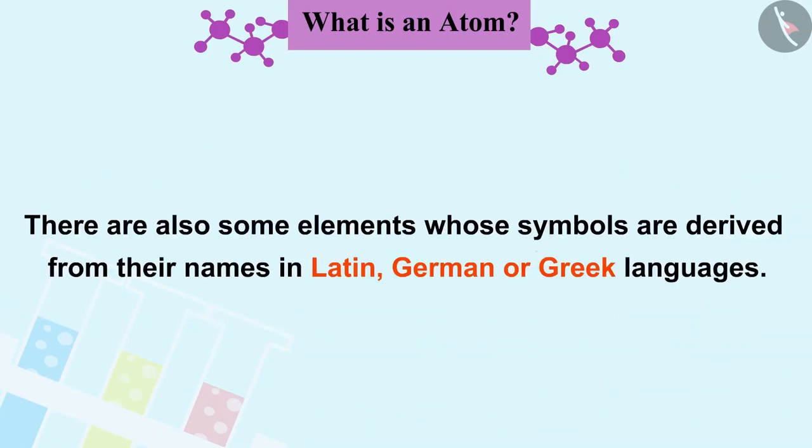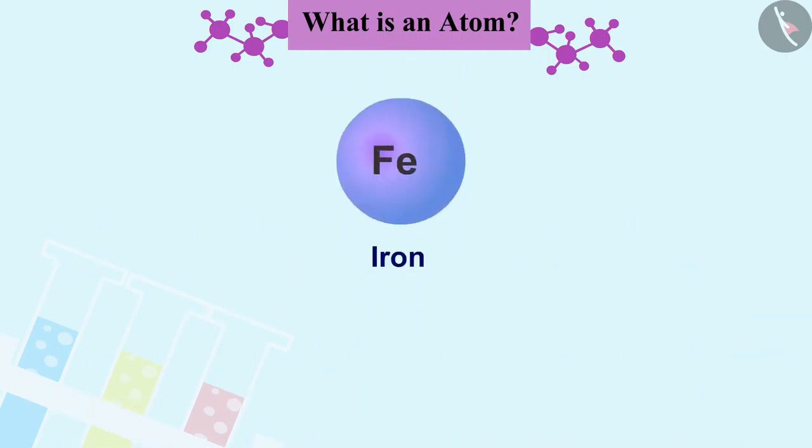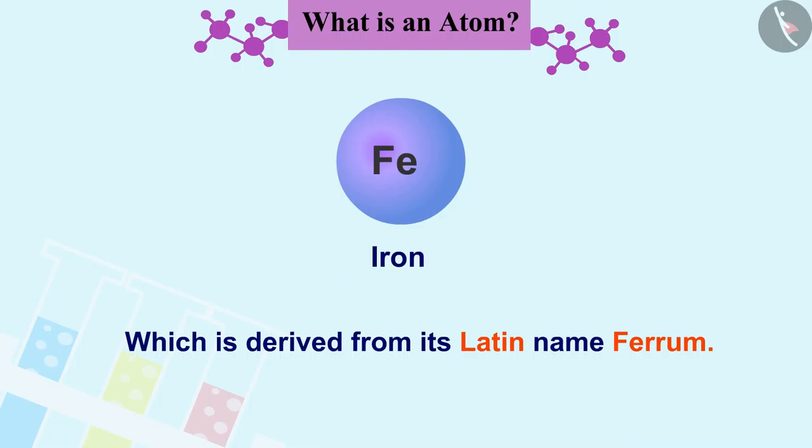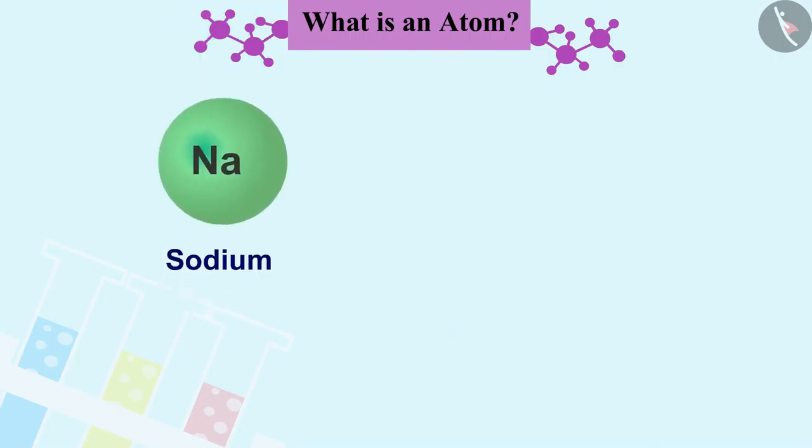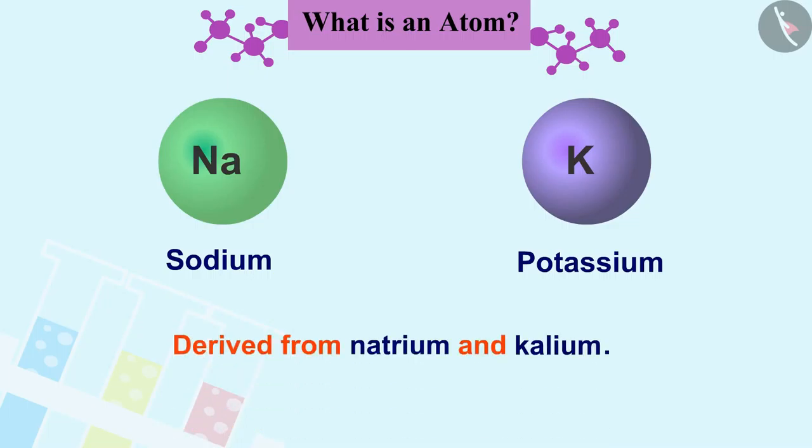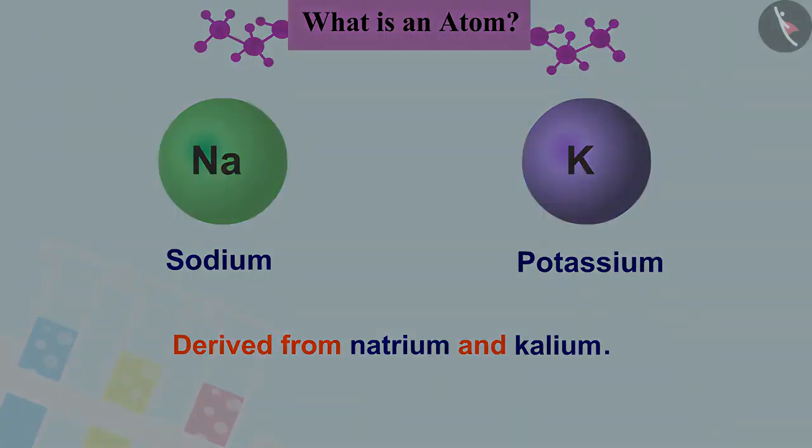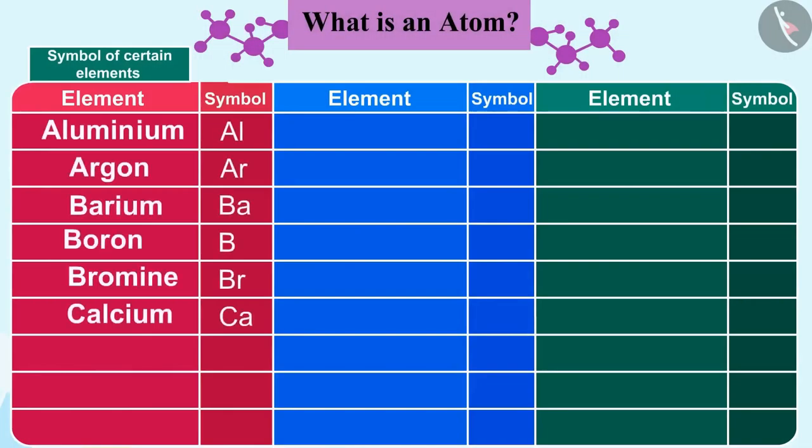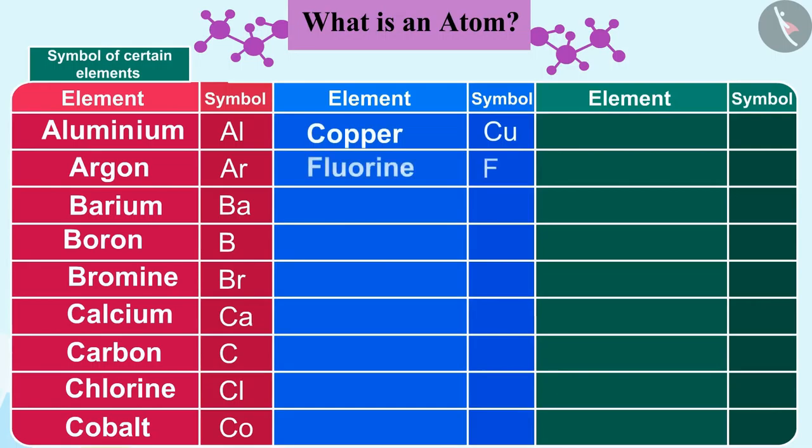There are also some elements whose symbols are derived from their names in Latin, German, or Greek languages. For example, iron symbolizes Fe, which is derived from its Latin name Ferrum. Similarly, sodium symbol is Na and potassium symbol is K. They are derived from natrium and kalium. Thus, each element has a name and a unique chemical symbol.